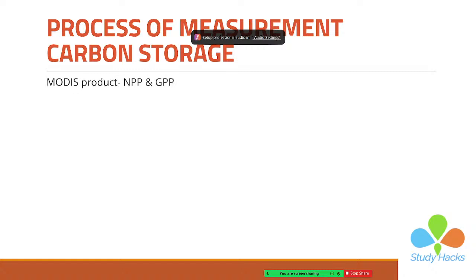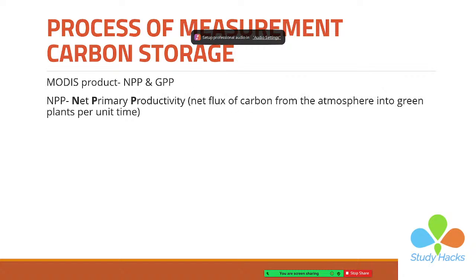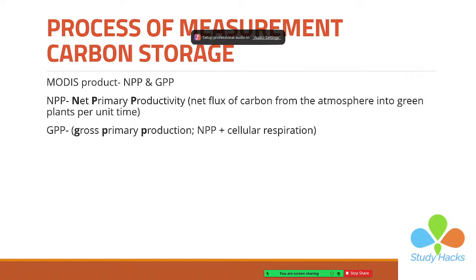Here we use MODIS satellite imagery. We use two MODIS products: the first product is NPP and the second product is GPP. NPP is the Net Primary Productivity — it provides you the net flux of carbon from the atmosphere into green plants per unit time. GPP is the Gross Primary Production, which is the combination of NPP and cellular respiration. We use these two products for measuring carbon storage for any particular area and time.